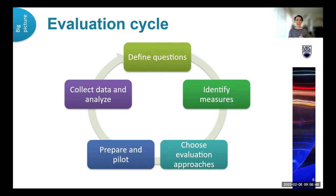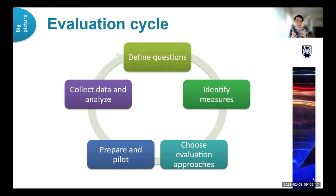We look at evaluation as an iterative process. These different stages include defining your evaluation or research questions; looking at different measures — what is it that you're hoping to evaluate? For example, does this open resource impact student motivation or student learning? Choosing an evaluation approach — how will you know if that's actually happening? Thinking about things like surveys, focus groups, or interviews. Then preparing and piloting your evaluation measure, and then collecting and analyzing that data. To get a sense of where people are at, we're going to share a poll asking you to select which stage of evaluation you're at.